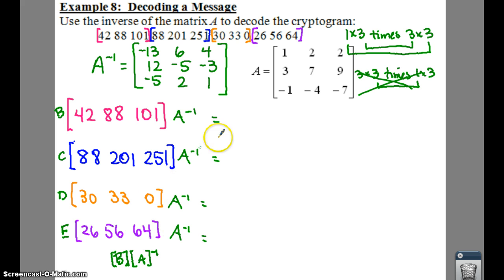So what that spits out for the top one is it gives you a 5, 14, and a 5. When you take 88, 201, and 251 times your inverse, that ends up giving you a 13, 25, and a 0. When you do it to D, you get 6, 15, and 21. And then down at the bottom, you have 14, 4, and 0.